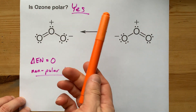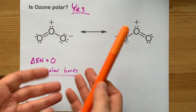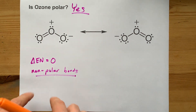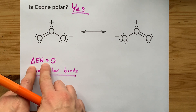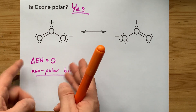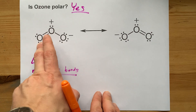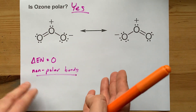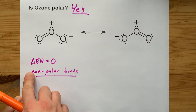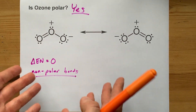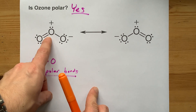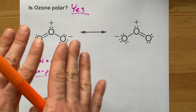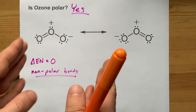Is ozone polar? The answer is yes, even though at one point in my life I thought the answer was no. I thought that because the difference in electronegativity between each of the atoms was zero — which it is, since oxygen and oxygen are the same atom — that meant the covalent bonds in the molecule are non-polar. And I thought that meant the whole molecule as a whole couldn't be polar.